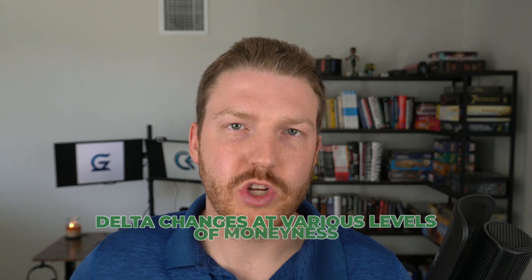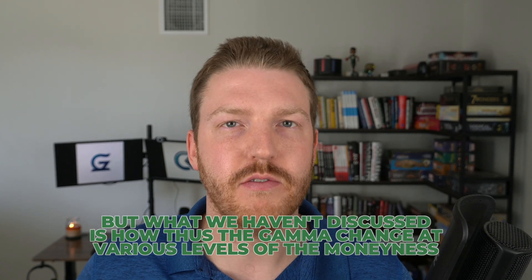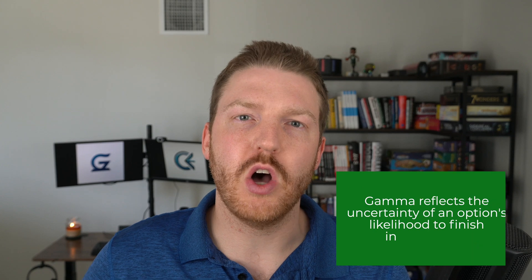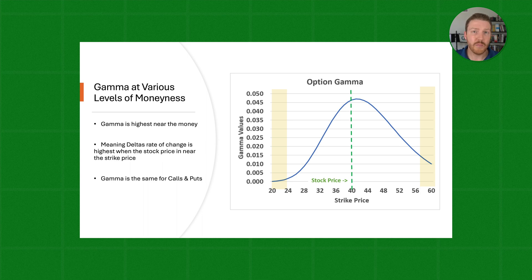We've talked a lot about how delta changes at various levels of moneyness, but what we haven't discussed is how gamma changes at various levels of moneyness. This graph shows that option gamma is highest when an option is near the money, meaning the delta's rate of change is highest when the stock price is near the strike price. In essence, gamma reflects the uncertainty of an option's likelihood to finish in the money. Near the money, there is the most uncertainty of whether an option will finish in or out of the money. Once we get into the tails — further in or out of the money — it becomes more certain, whereas right in the center, gamma is very high and plays a great effect on the rate of change of delta.